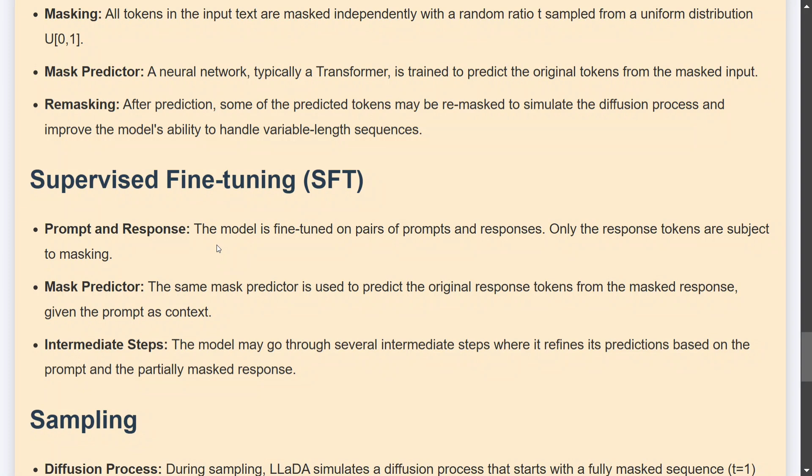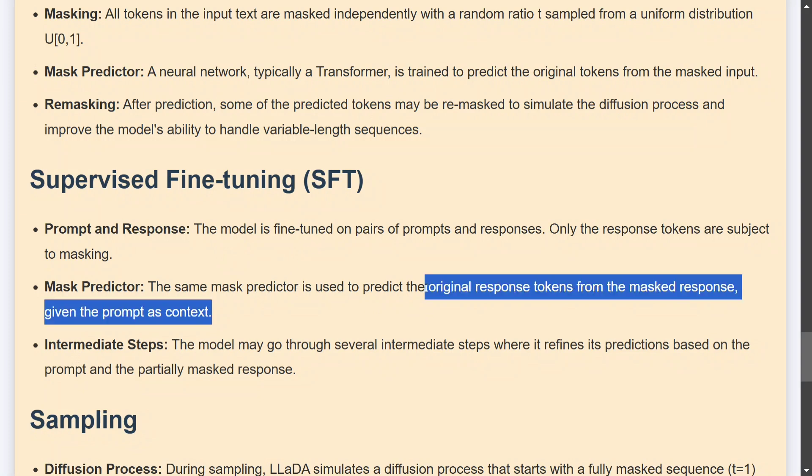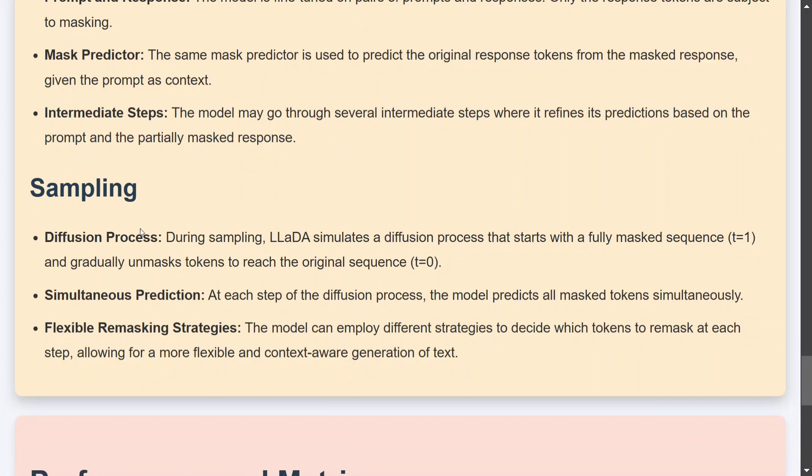Where supervised fine-tuning almost remains the same, the model is fine-tuned on a pair of prompts and responses where responses are subjected to masking, not the prompt. Do remember this. Mask prediction is used to predict the original response token sampling diffusion process.